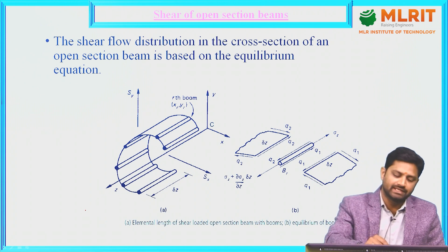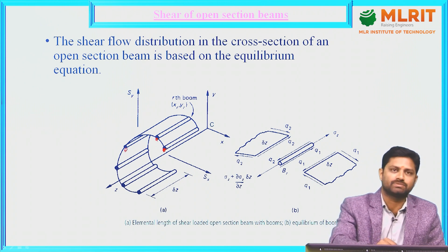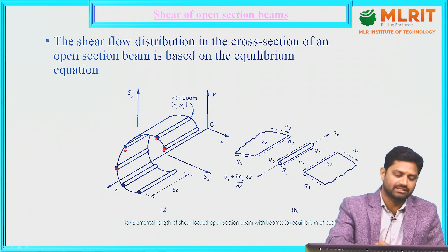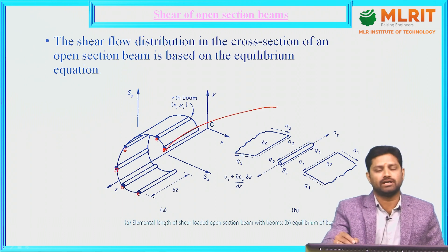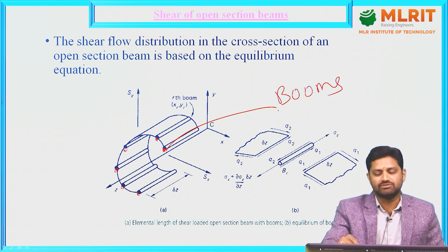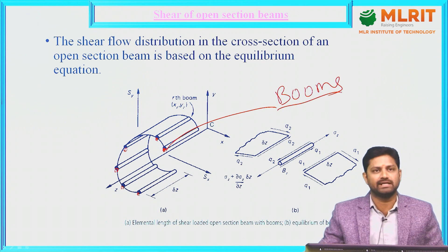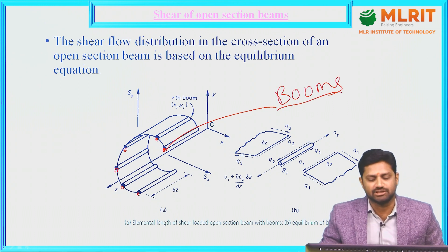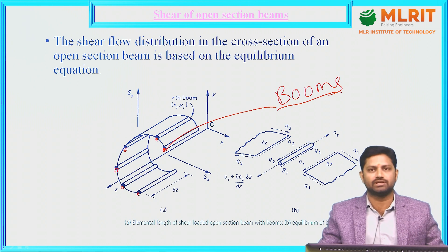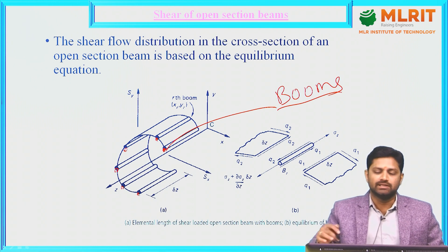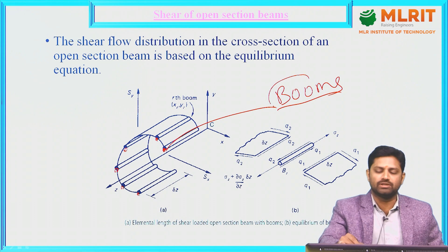We are seeing thick dots over here — 1, 2, 3, 4, 5, 6 places. These dots are nothing but we call them as booms. This is very, very important in aircraft structures, especially when we consider shear of open section beams or closed section beams, to know about these booms.